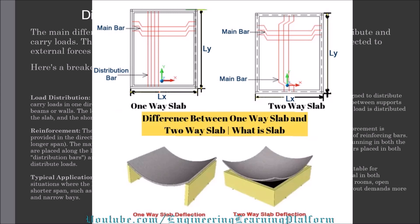This shows the typical deformation characteristics of one-way and two-way slabs along with the reinforcement schematic for design. In a two-way slab, we have main bars in both directions. In a one-way slab, we have the main bar in the shorter direction, while distribution bars or shrinkage reinforcement control cracking of concrete in the longer direction. One-way deflection occurs in the shorter span, which also acts as a simple support, while for two-way slabs, deflection acts in both directions or both axes.